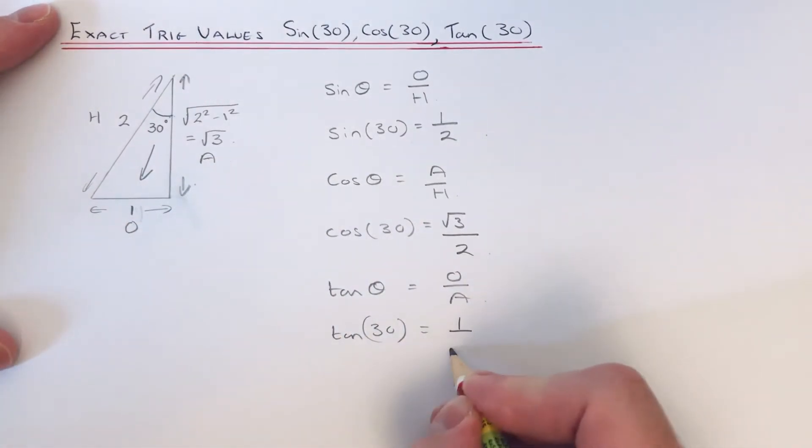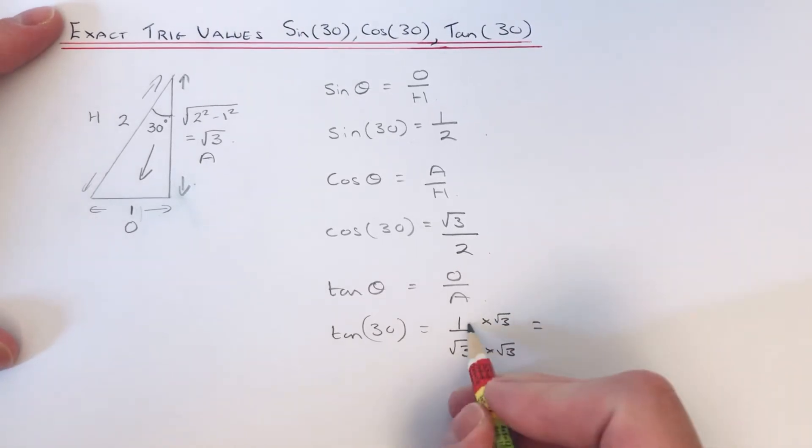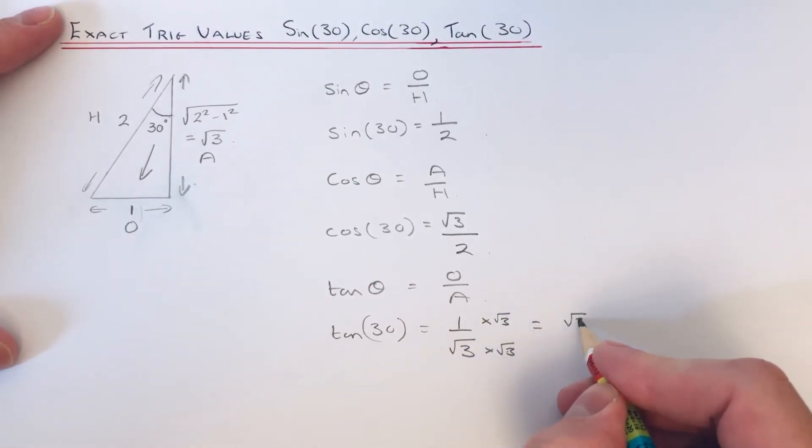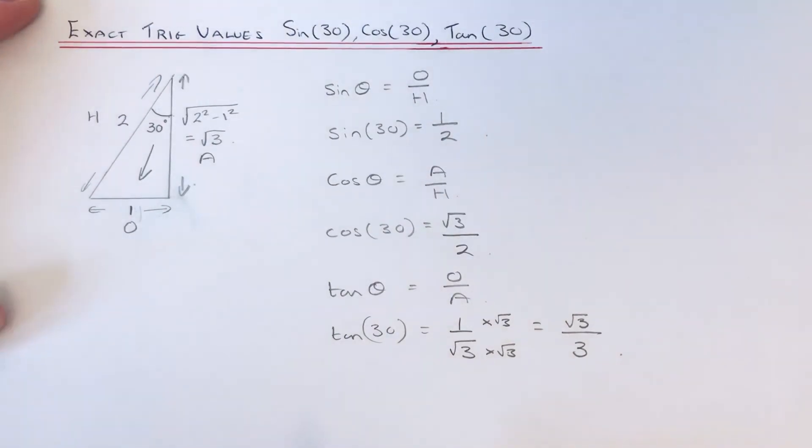This final one we can actually rationalize the denominator. Do this by multiplying the top and bottom by √3, so 1 times √3 is √3, and √3 times √3 is 3, giving us √3 over 3.